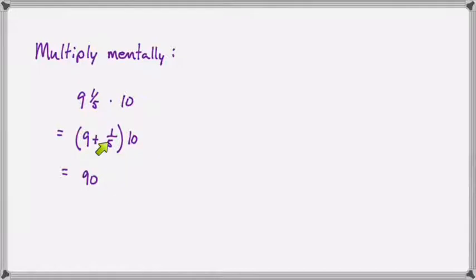And 10 times one fifth is 10 fifths. Now 10 fifths we know simplifies to two. So now we have 90 plus two, which is 92.